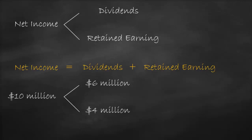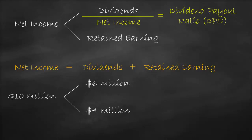If we would like to know what the percentage of dividends the company distributes to shareholders from net income, we'd need to divide dividends by net income, which is called the dividend payout ratio. So, in our example, we would divide dividends of $6 million by net income of $10 million, which will give us a dividend payout ratio of 60%.